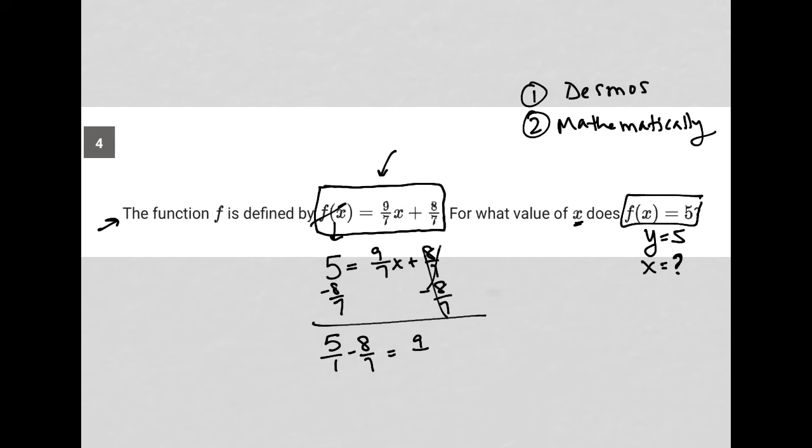Actually, there's a faster way to do this. Let me go back. I just realized there's a faster way to do it. So again, I'd still have 5 = (9/7)x + (8/7). But what if I just multiplied the whole thing by 7 so I'm not dealing with fractions anymore? So I'd have 35 = 9x + 8.